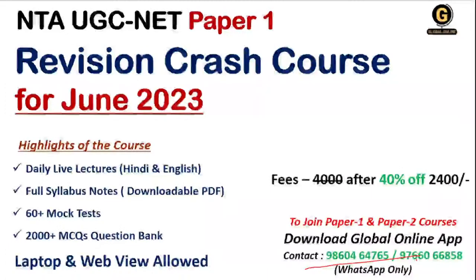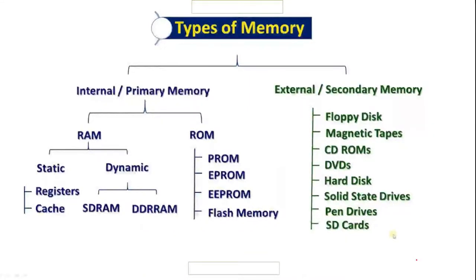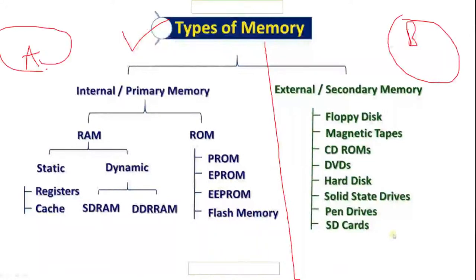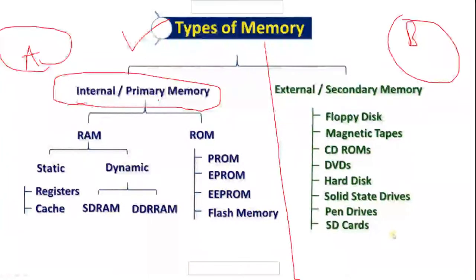Let's start today's session. Yesterday we covered the diagrammatic presentation on types of memory, divided into Part A and Part B. Part A covered internal or primary memory: RAM and ROM. Under RAM we saw static memory — registers and cache — and dynamic RAM including SDRAM and DDRAM. Under ROM we covered programmable ROM, erasable ROM, electrically erasable ROM, and flash memory. Now let's move to secondary memory.